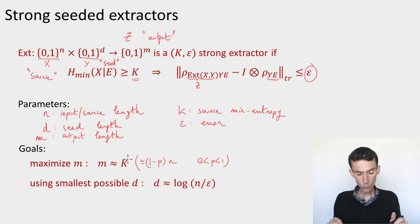What you can argue, however, is that the seed cannot be too small. In particular, it cannot be less than logarithmic in the source length n divided by epsilon.